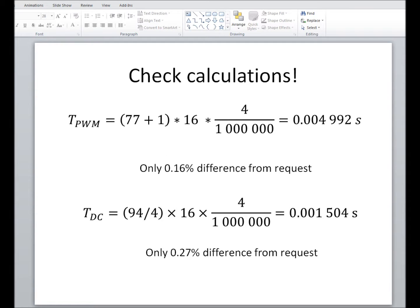Let's always check our calculations at the end. So, going back to the original formula, but using the number we found, 77, plus 1 times 16 times 4 over a million. This is how much the period is. And if we compare that to what we wanted, 0.005, we're only 0.16% different. Bang on, as far as we're concerned. Same way with the duty cycle, plugging in the numbers we found, we're only slightly over by about 0.27%. Excellent. So, we're very close. Being that close is really good.